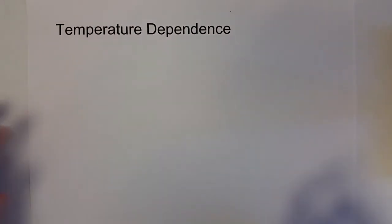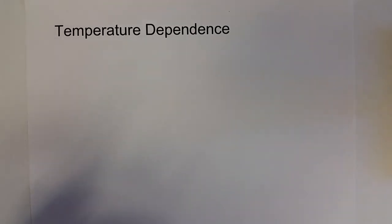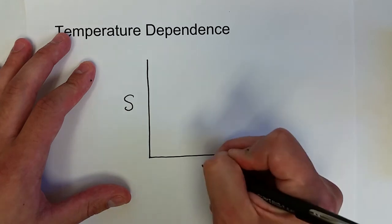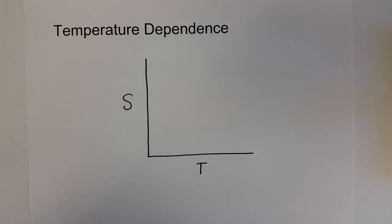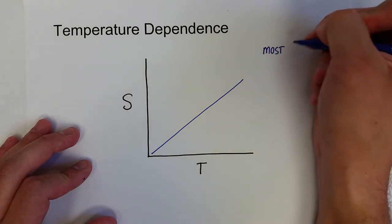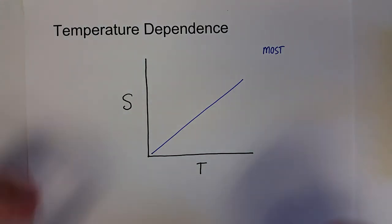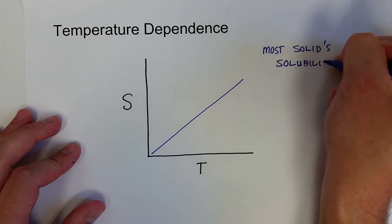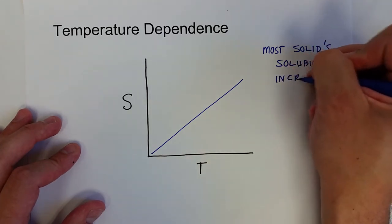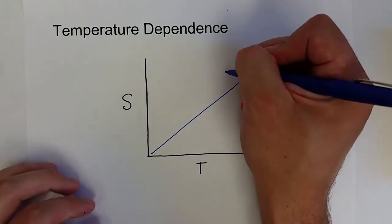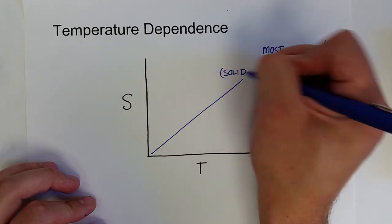One last thing to think about in terms of introducing solutions is the temperature dependence of solutions. It turns out that if we were to talk about the solubility of a solution as a function of temperature, it turns out that most solutions for solid compounds increase. That is because most of those solutions forming are endothermic. And so most solids solubilities increase with temperature. And the key word here is most. So some actually decrease with increasing temperatures.